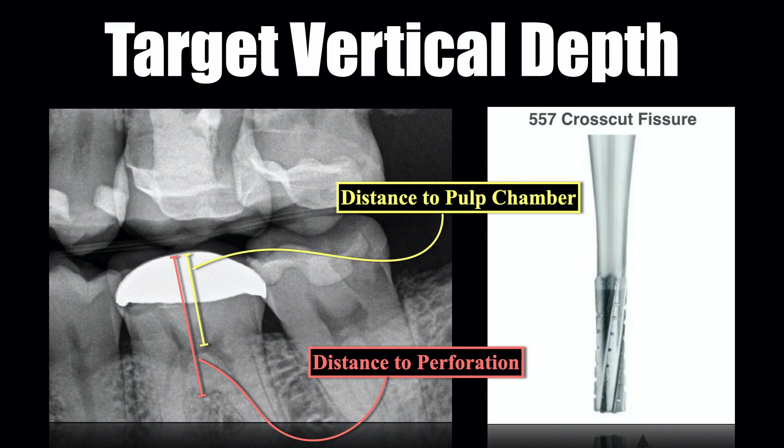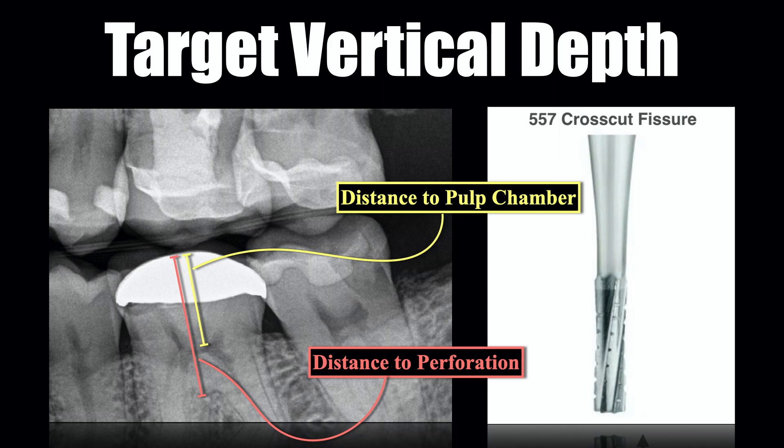This information is only valid when we understand how deep we are as we're making the access. For this reason, I typically use the same bur for access preparation in every tooth if I can. My favorite bur to access with is a 5-57 crosscut Fisher bur, because I understand the dimensions of that bur extremely well. I don't care what bur you use — use your favorite — but you have to understand the dimensions of the bur that you're using.